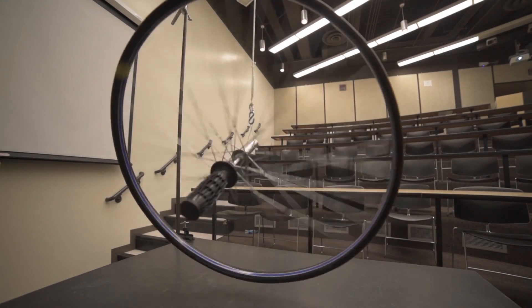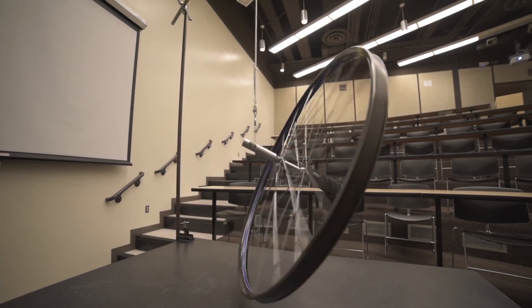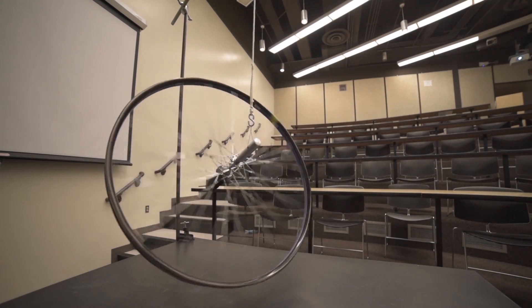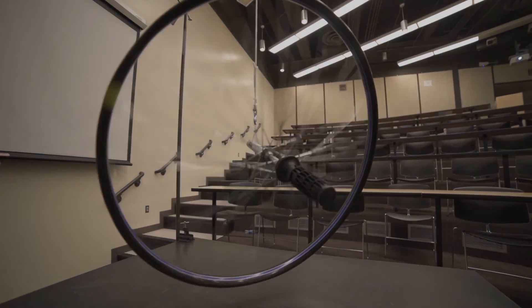Due to friction in the axle, the spin rate of the wheel will eventually slow down and allow gravity to overcome the precession. Otherwise, the wheel would levitate forever, and that would be pretty sweet.